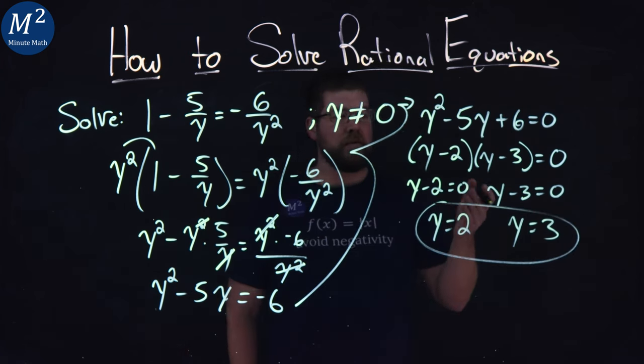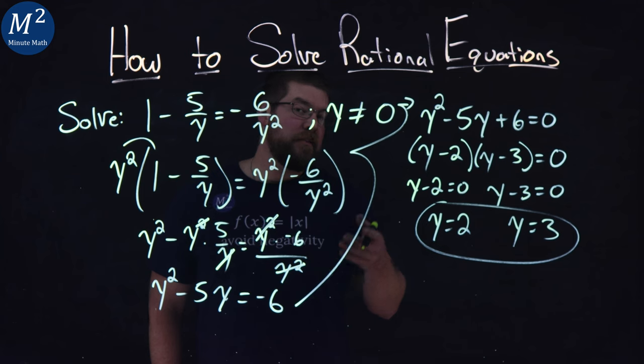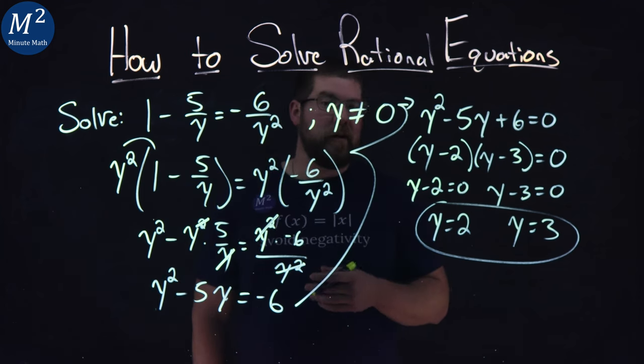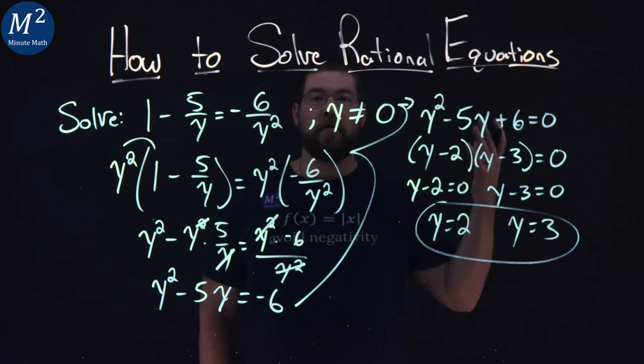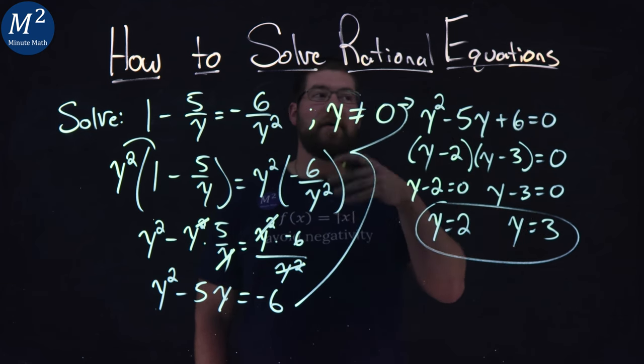So our two solutions here are y equals 2 and y equals 3, and I'll leave the check for you to plug back in to see if they are true, but I'll give you a hint, they are. So y equals 2, y equals 3 is our final answer for this rational equation.